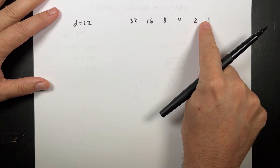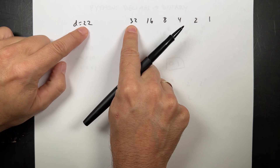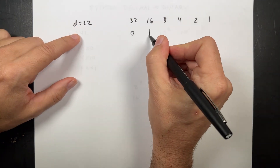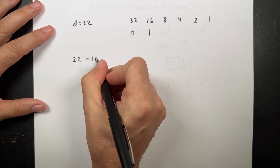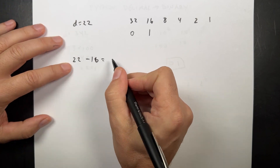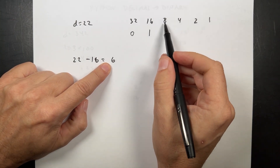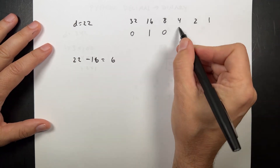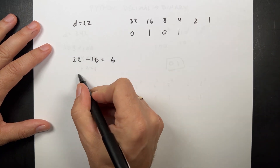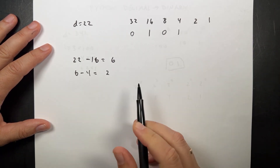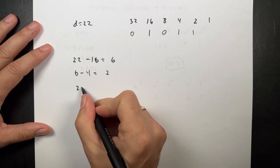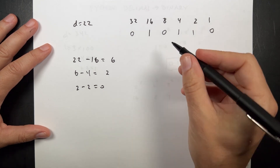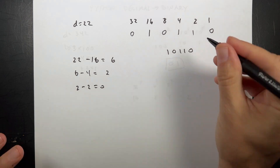We're going to start by looking at the largest power of 2 that goes in evenly. I'll write 1, 2, 4, 8, 16, 32. So 32 does not go into 22 — I could put a 0 there. I do need a 16, so 22 minus 16 equals 6. How many 8s do I need to represent 6? None. How many 4s? One — so 6 minus 4 equals 2. How many 2s? One — 2 minus 2 equals 0. How many 1s to get 0? Zero. So the binary number is 1, 0, 1, 1, 0. We'll call that B.